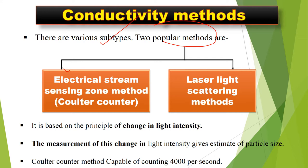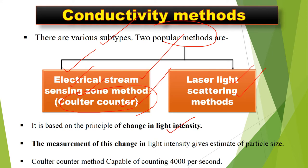We are going to discuss the electrical stream sensing zone method, also called the coulter counter method. The next method is the laser light scatter method. However, in today's lecture we will discuss only the coulter counter method, which is mentioned in your syllabus. The laser light scatter method is based on the principle of change in light intensity.